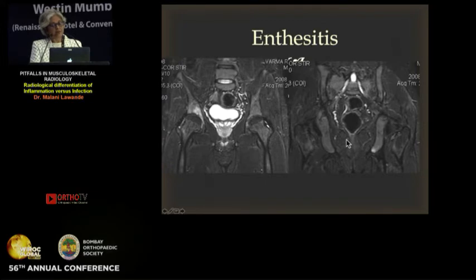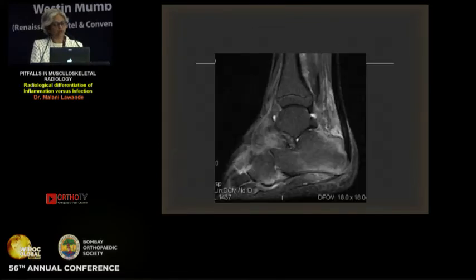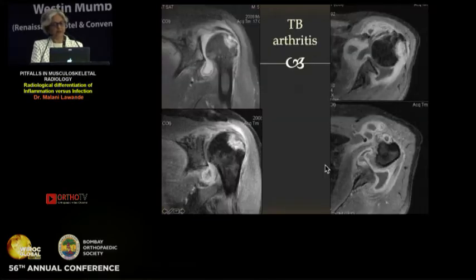When you see enthesitis like this, and when you have marrow edema in very odd locations — patchy marrow edema — that would fit into seronegative spondyloarthropathy. Again, enthesitis like this tells you this is seronegative spondyloarthropathy.